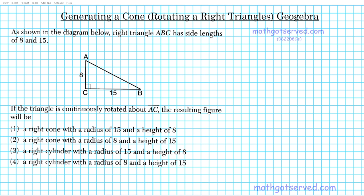If the triangle is continuously rotated about AC—so basically this is the axis of rotation, the vertical height here, AC—the resulting figure will be: (1) a right cone with radius 15 and height 8, (2) a right cone with radius 8 and height 15, (3) a right cylinder with radius 15 and height 8, or (4) a right cylinder with radius 8 and height 15.